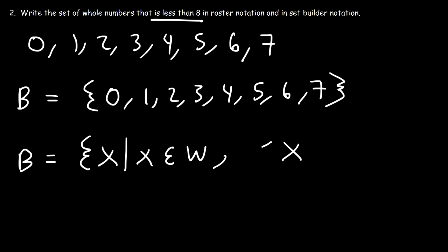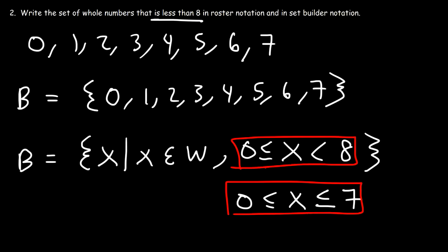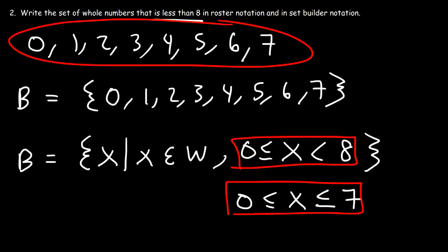X is equal to or greater than 0, but less than 8 as stated in the problem. Alternatively, X is equal to or greater than 0 but less than or equal to 7. Both of these compound inequalities will describe this set of numbers — you can use either one. However, you do need to state that X is a whole number.